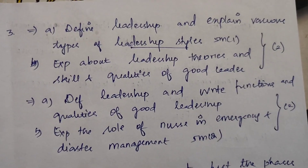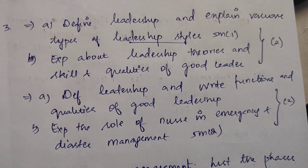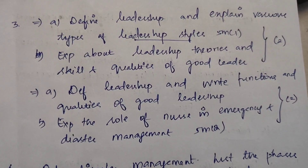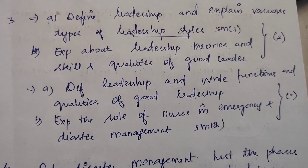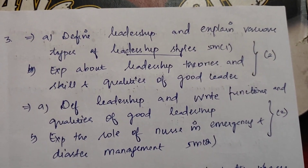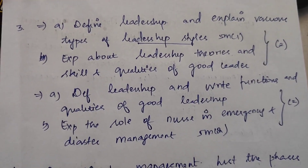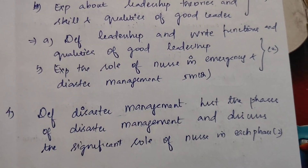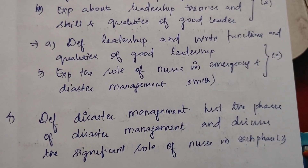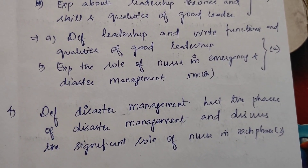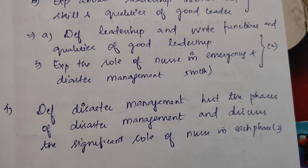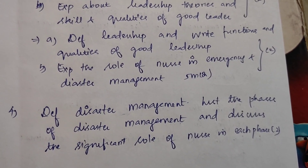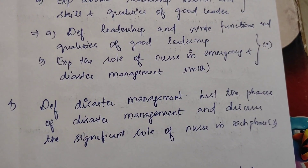Third question: define leadership and explain various types of leadership styles. Explain about leadership theories, skills and qualities of a good leader — this appears twice in 15 marks (options A and B). Leadership styles appears twice in 5 marks. Also, define leadership and write functions and qualities of good leadership. Explain the role of nurse in emergency and disaster management — this appears twice in 15 marks and also in 5 marks.